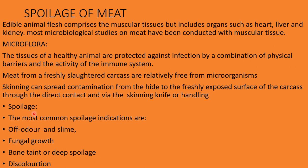The rate and nature of spoilage depends upon the numbers and types of organisms initially present, the conditions of storage, and the characteristics of the meat such as pH. So these three aspects — number and types of organisms present, conditions of storage, and characteristics of the meat — have an effect on spoilage.